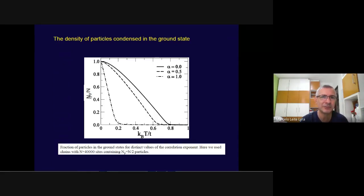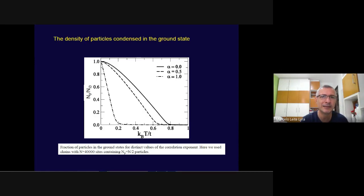We used the traditional statistical mechanics approach for the thermodynamics of this ideal Bose gas and computed the fraction of particles occupying the ground state for different values of the correlation exponent α. For α=0 (pure uncorrelated disorder), this fraction is finite at low temperatures and goes to zero at a characteristic transition point. As α increases, the transition temperature decreases and eventually goes to zero for strong correlations.